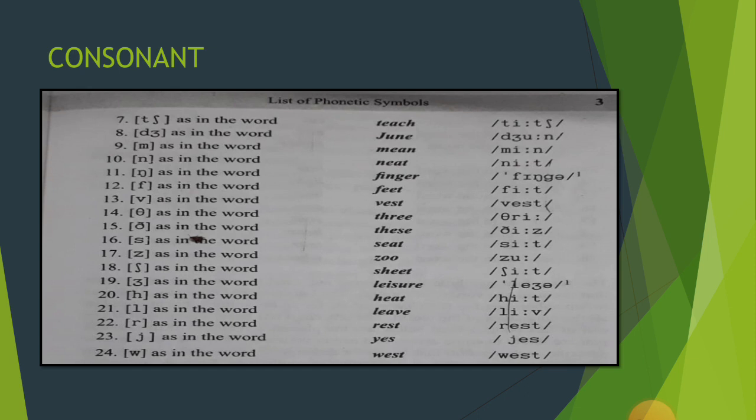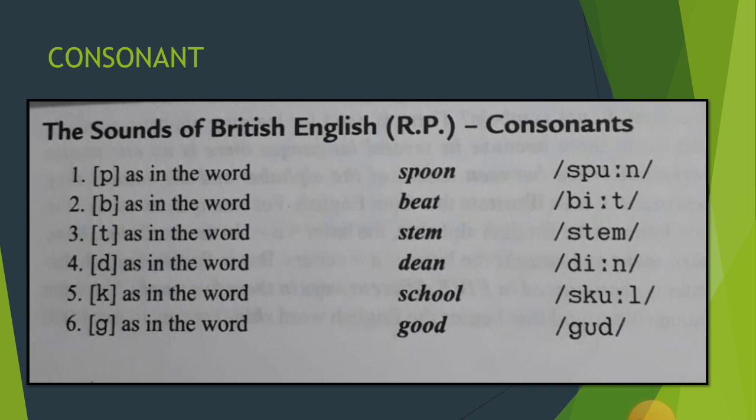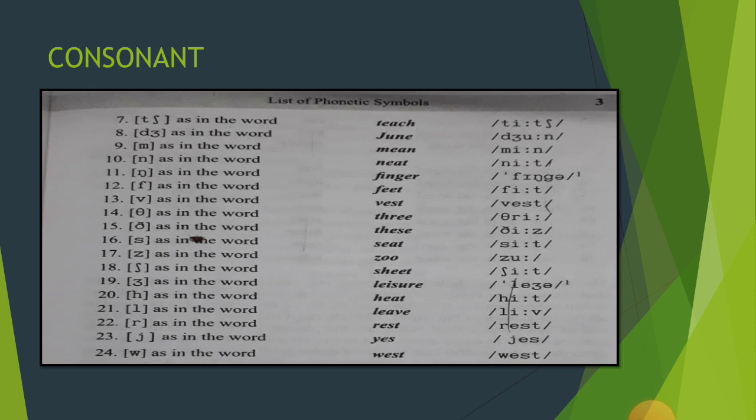Quick revision of all 24 consonant sounds: [p], [b], [t], [d], [k], [g], [tʃ], [dʒ], [m], [n], [ŋ], [f], [v], [θ], [ð], [s], [z], [ʃ], [ʒ], [h], [l], [r], [j], [w].